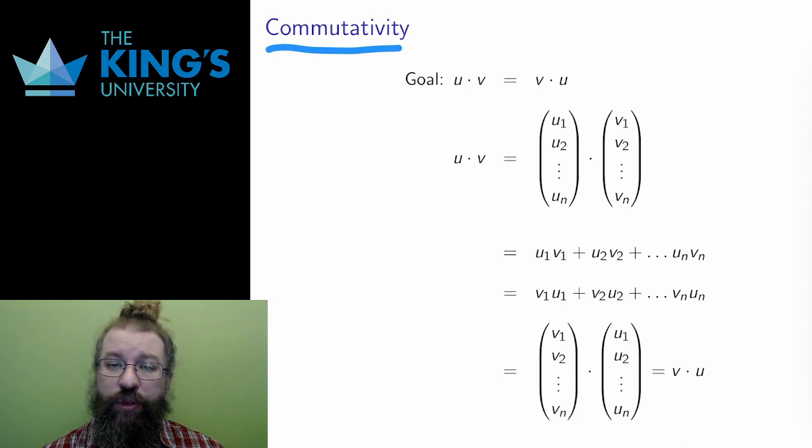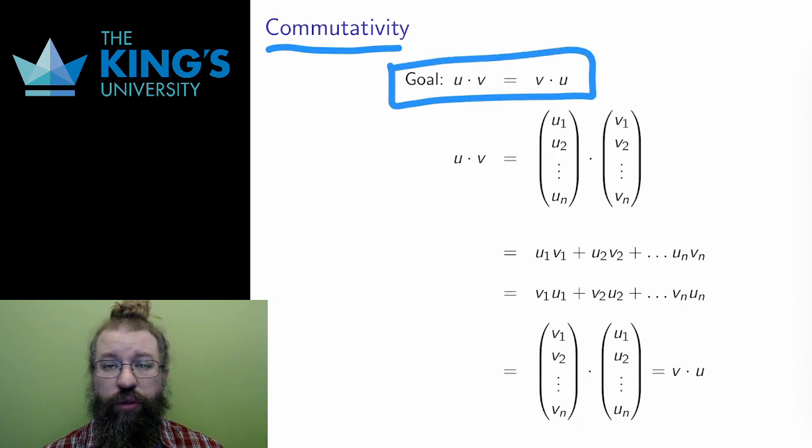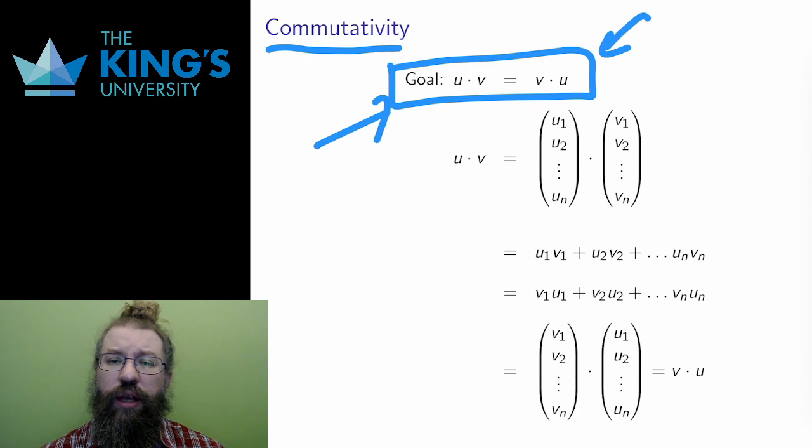My goal is the statement u dot v equals v dot u. It's often very helpful to write the goal at the start, but being careful that I'm not using that equation. The goal should only show up again at the end. To reach the goal, I'll start at one side of the equation and work towards the other.